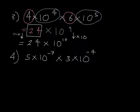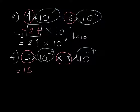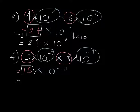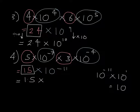Question 4: 5 multiplied by 10 to the negative 7, multiplied by 3 times 10 to the negative 4. We multiply 5 by 3 to give us 15, and then multiply 10 to the negative 7 by 10 to the negative 4, giving us 10 to the negative 11 by adding the indices. Now, this is not in standard form, so instead of 15 we write 1.5. Because we've divided 15 by 10, we multiply 10 to the negative 11 by 10, and adding the indices gives us 10 to the power of negative 10.